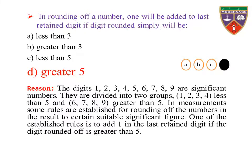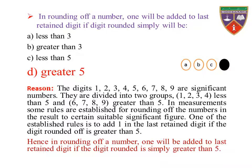Reason: The digits 1 through 9 are significant numbers. They are divided into two groups: 1, 2, 3, 4 (less than 5) and 6, 7, 8, 9 (greater than 5). Some rules are established for rounding numbers to certain significant figures. One established rule is to add 1 to the last written digit if the digit rounded off is greater than 5. Hence, in rounding a number, 1 will be added to the last written digit if the digit rounded is simply greater than 5.